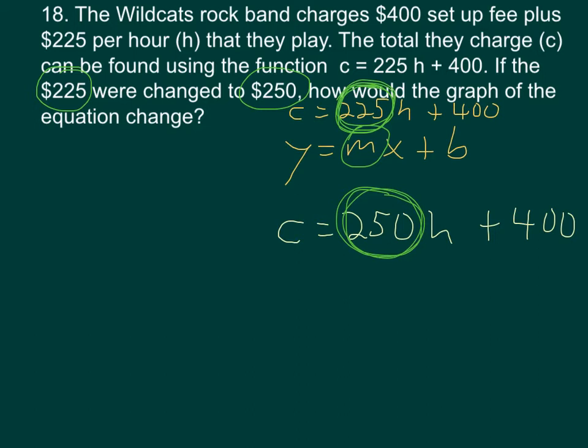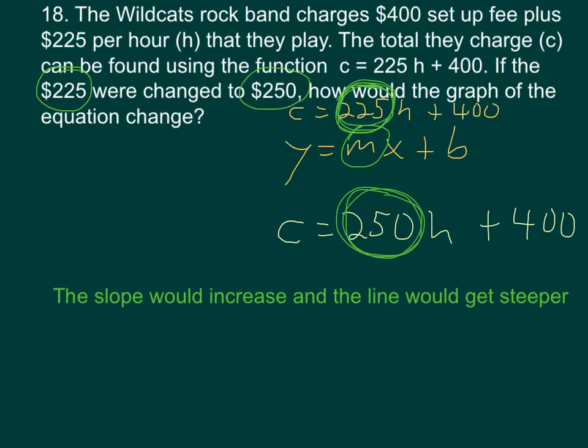So the answer to this question is, the slope would increase and the line would get steeper. Which makes sense, because if they charge more per hour, the amount they have to charge in total will go up more quickly for every hour that they play.